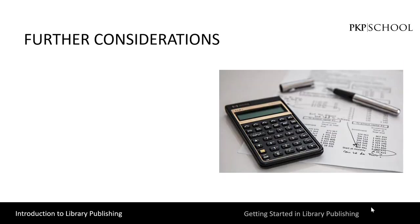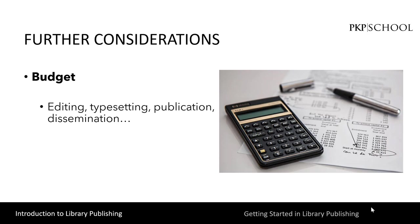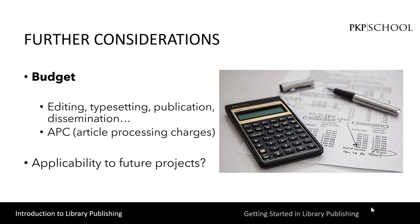We've discussed the first questions you need to ask when deciding whether to take on a journal project, as well as the next preliminary steps. Now we will talk about some further considerations. First, budget. How do you intend to pay for the editing, typesetting, publication, and dissemination and/or discovery of the journal? Open access can eliminate the need to manage subscriptions, but free to readers does not mean free to produce. Some established open access journals charge article processing charges, or APCs. You'll also want to consider if the work you put into this journal can be applied to other projects in the future. Bear in mind that excellent content is only part of the process — publishing a journal well is about matching that content with pragmatic knowledge and skill.